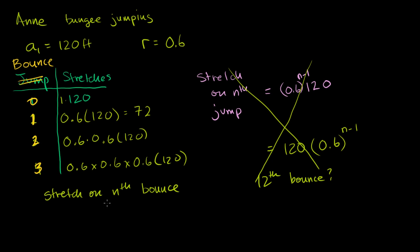Then this makes sense that this is 0.6 to the 0th power. This is the first bounce, then this would be 0.6 to the first power. Second bounce, 0.6 to the second power. And it made our equation a little bit simpler. Anyway, hopefully you found that interesting.